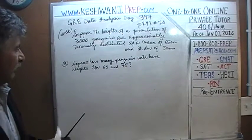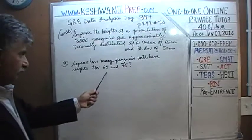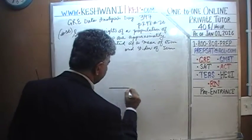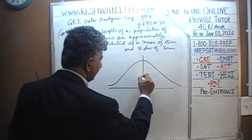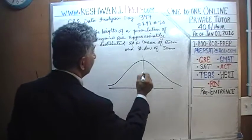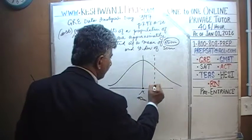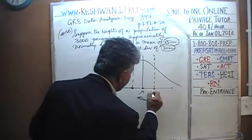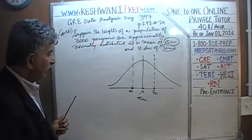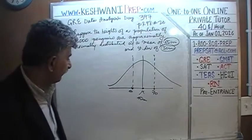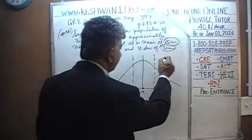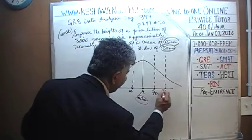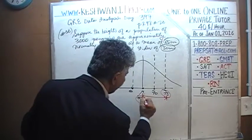Let's find out — between 65 and 75 centimeters, Part A. Here's your normal distribution. Here is the mean, which in this case is 65 centimeters. If we go one standard deviation this way, we're at 70. If we go one more standard deviation, we reach 75. We want the penguins between these two points: 65 and 75.